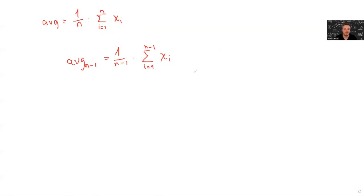Here is the trick. I multiply this side by N minus 1, so I get N minus 1 times the average of N minus 1 elements equal to sum from i equals 1 to N minus 1, xi.